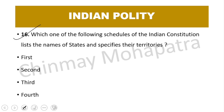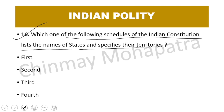Question 16: Which one of the following schedules of the Indian constitution lists the names of states and specifies their territories? The right answer is the First Schedule. The First Schedule lists all states and specifies their territories and boundaries.